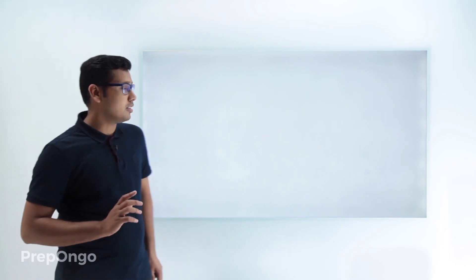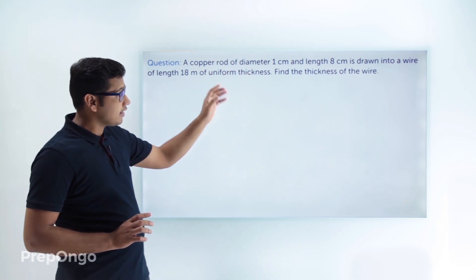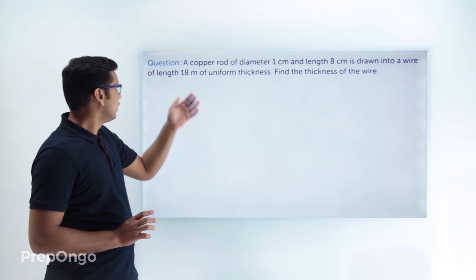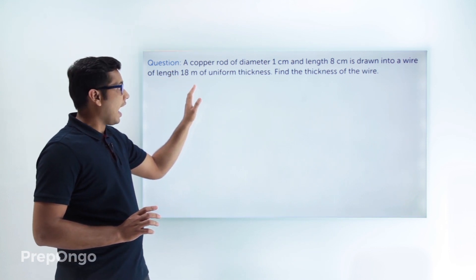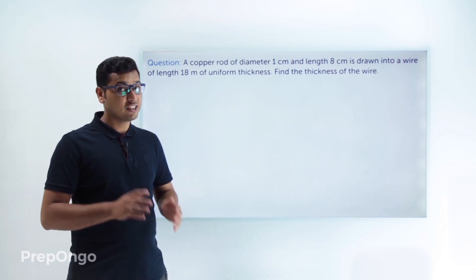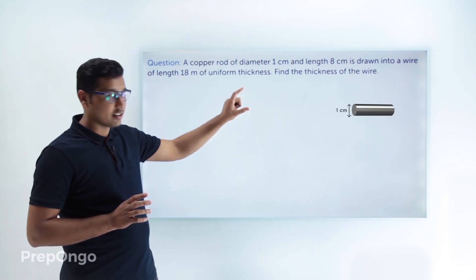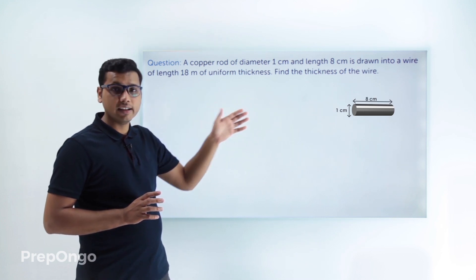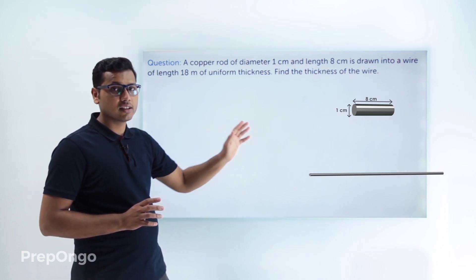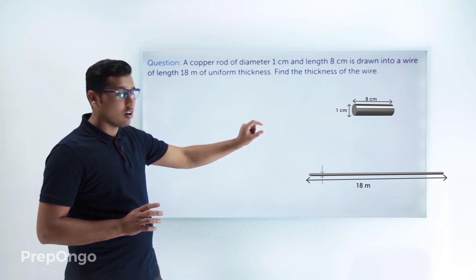Let's have a look at this example. The question says there is a copper rod of diameter 1 centimeter and length 8 centimeters. This rod is drawn into a wire whose length is given to be 18 meters and it is of uniform thickness. We have to find the thickness of the wire.